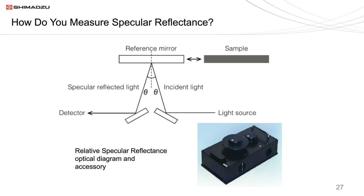Specular reflectance accessories can be either fixed angle or variable. The measurement involves placing a reference mirror on the surface for background correction, then placing your sample. Bear in mind your background correction sets the instrument to 100%, but most reference mirrors are aluminum and on the order of about 90%. To correct this, use a calibrated reference mirror where the values are known — place those values into the software and it will normalize everything to give you an absolute reflectance.